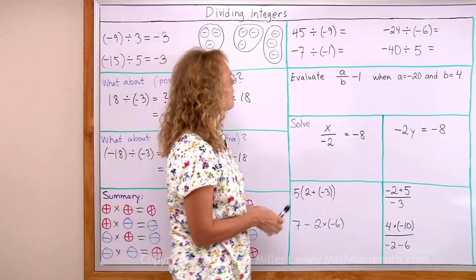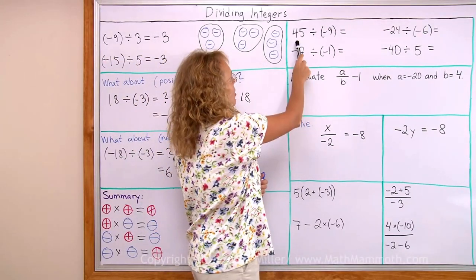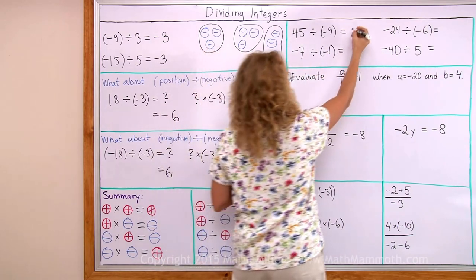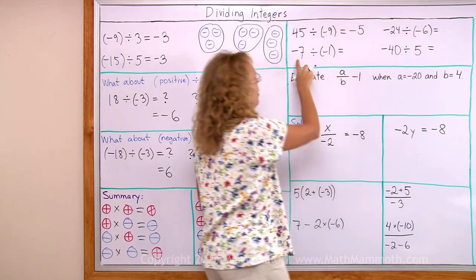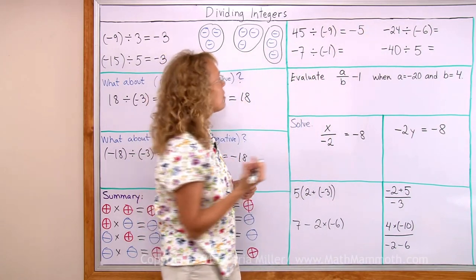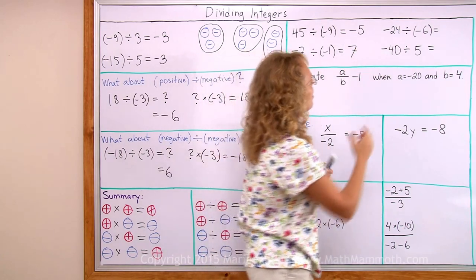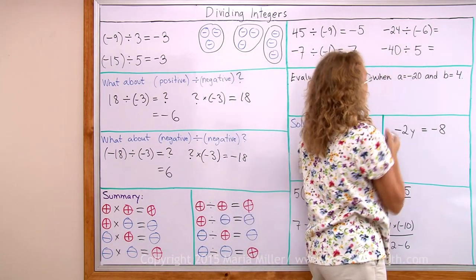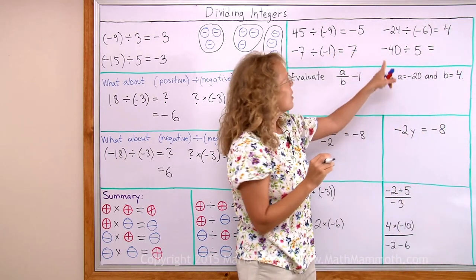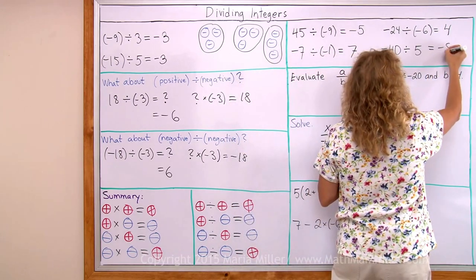Now let's practice. 45 divided by negative 9 — positive and negative, so the answer will be negative 5. Over here, negative divided by negative, so the answer will be positive 7. And then again, negative divided by negative, so the answer is positive 4. And here, negative divided by positive — the answer has to be negative, negative 8. So it's not difficult.